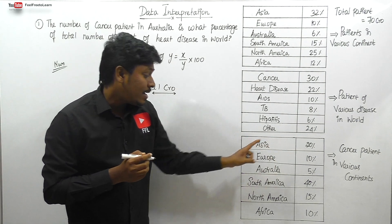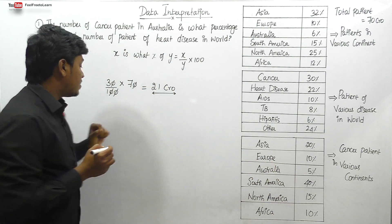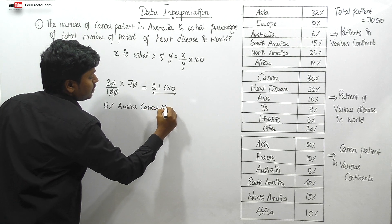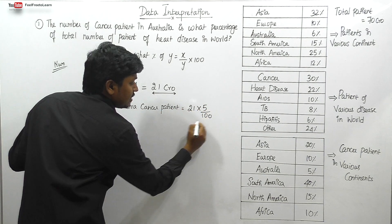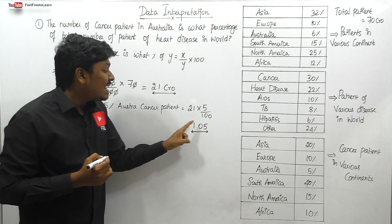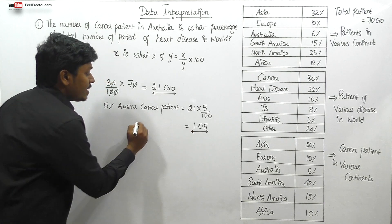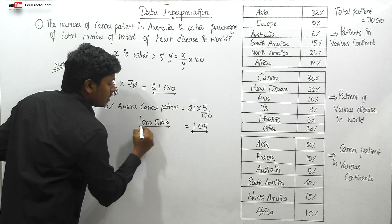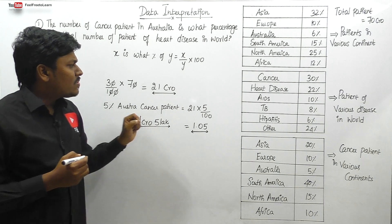From the third chart, cancer patients in Australia are 5% of total cancer patients. So 5% of 21 crores = 21 × 5 / 100 = 1.05 crores, which equals 1 crore 5 lakh. That is the numerator — cancer patients in Australia. Now for the denominator, odd disease patients in the world: odd disease is 22% of 70 crores.